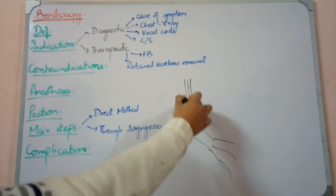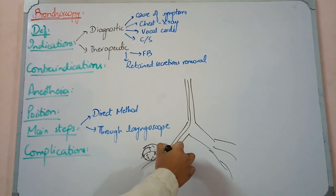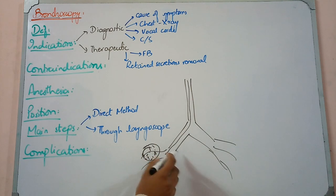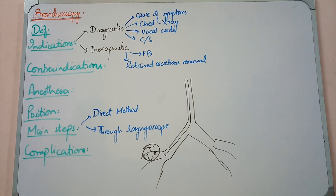Because you introduce the instrument here into the bronchi. Sometimes you can also use a fiber optic bronchoscope, which is flexible, so you can view the inside very easily. This is your bronchoscopy.